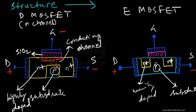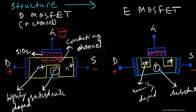This depletion region increases in width, and the channel width decreases as we increase the negative voltage on the gate terminal of the D-MOSFET. The amount of current flowing through the channel decreases as we increase this gate-source voltage with a negative potential on the gate, and the drain current decreases in magnitude.